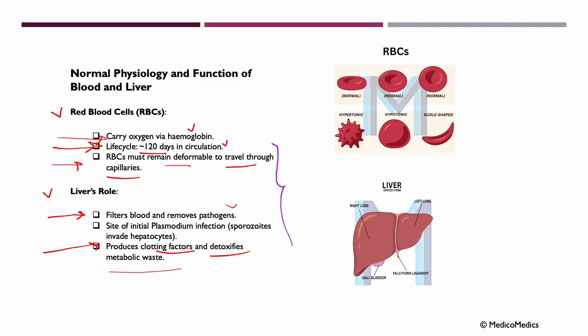Malaria parasites spend a significant part of their life cycle inside red blood cells. Normally, red blood cells are smooth biconcave discs, and this structure helps the RBC travel easily through our blood vessels and efficiently deliver oxygen. But when infected by plasmodium, the shape and function of RBCs can change dramatically. With plasmodium falciparum infection, the RBCs can become sticky and irregular in shape, which can lead to blockage in small blood vessels — a major cause of complications like cerebral malaria.